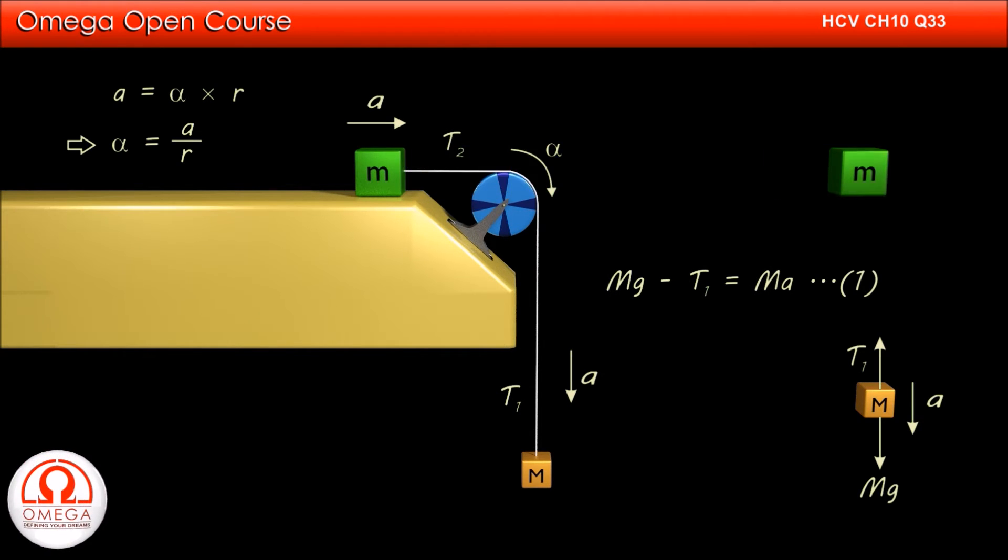In the free body diagram of m, the only horizontal force is T₂, and because of this force, the block moves towards right with acceleration a. Therefore, T₂ must equal ma.